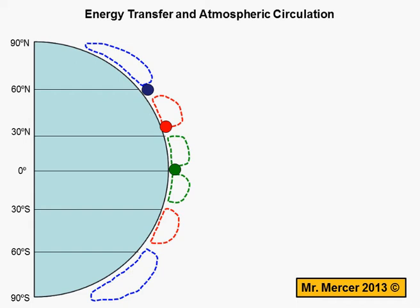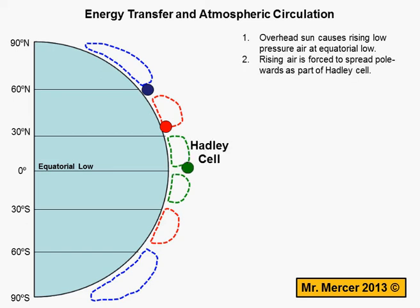So let's get started. First, the overhead sun causes rising low-pressure air at the equatorial low. Hot air rises, which means it pushes down on the Earth with less force, so we refer to it as low-pressure air. The rising air is then forced to spread polewards and forms part of the Hadley cell, which you can see labelled on your screen.